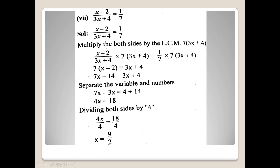Question number 7: (x minus 2) divided by (3x plus 4) is equal to 1 by 7. Multiply both sides by the LCM of 7 and (3x plus 4). ہم 7(3x plus 4) سے اس لیے multiply کر رہے ہیں تاکہ (3x plus 4) cancel out ہو اور 7 بھی cancel ہو۔ Left side پر (3x plus 4) cancel، right side پر 7 cancel۔ تو 7(x minus 2) is equal to 3x plus 4۔ 7 کو اندر multiply کریں: 7x minus 14 is equal to 3x plus 4۔